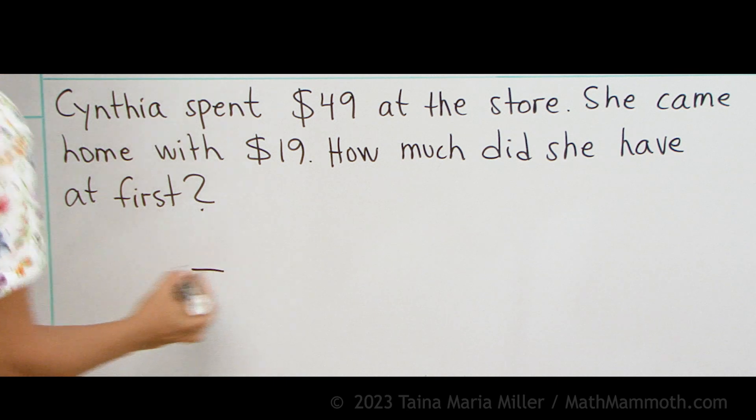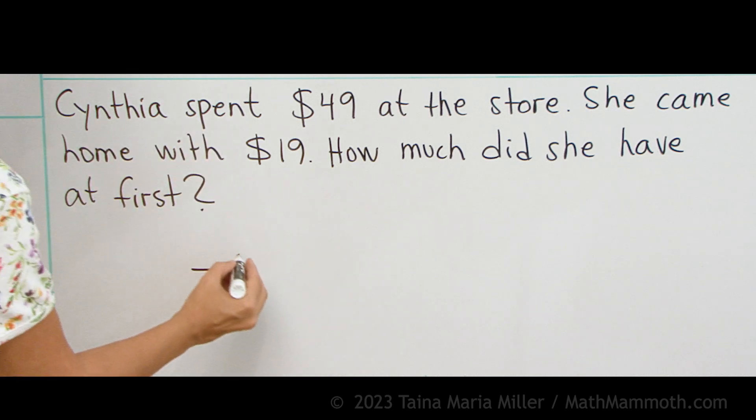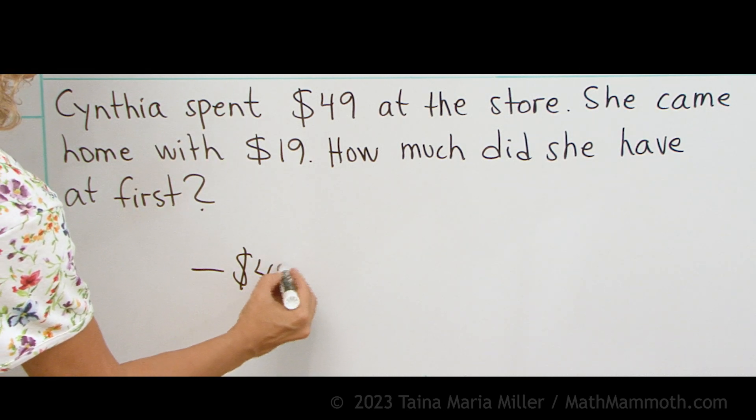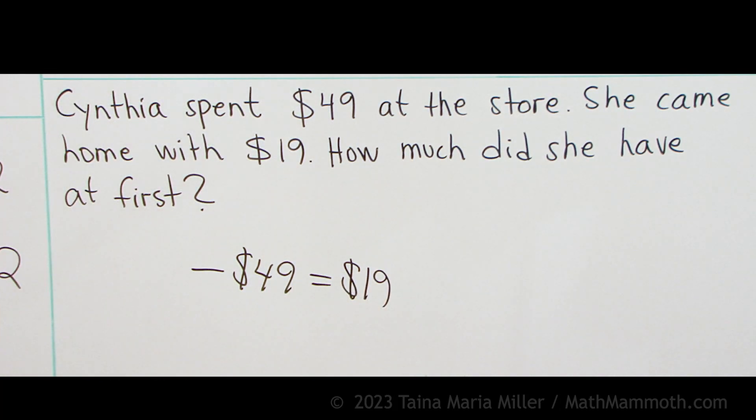So I subtract, or I can write a subtraction. And what is subtracted is the $49. That's how much goes away. And what is left is the $19. And we don't know how much she has in the beginning. Triangle again. You could use a question mark too.